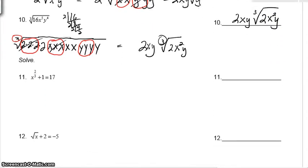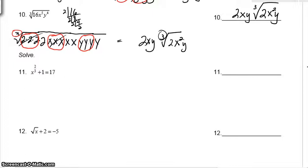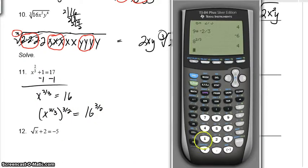All right. As we move on to number 11, let's get our x alone. We can minus a 1 from both sides. And 17 minus 1 is 16. And then we're going to raise both sides to the reciprocal power. The reciprocal of 2 thirds, of course, is 3 halves. So I'm going to raise the left side and the right side to the 3 halves power. Tell you what, without too much work, we can go 16 to the 3 halves. I think you'll see quickly you get a nice answer of just 64.